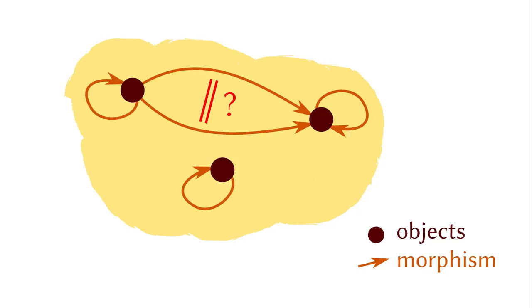One major achievement of category theory is to capture various constructions and properties by equality between morphisms without referring to how things are concretely defined. It thus provides a unified language for concepts coming from different fields. As long as your morphisms satisfy the same equations, the same theorems apply.